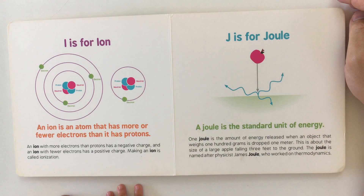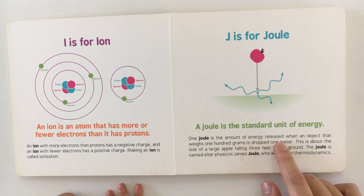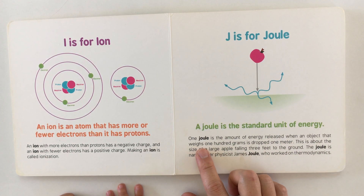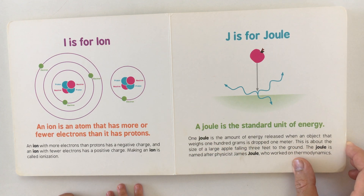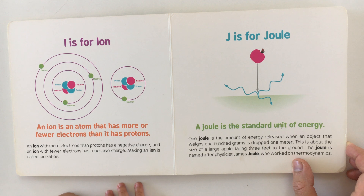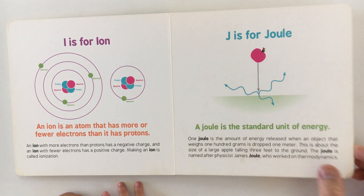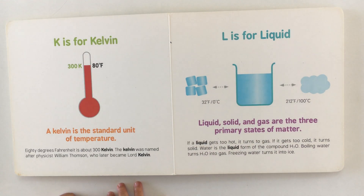J is for joule. A joule is a standard unit of energy. One joule is the amount of energy released when an object that weighs 100 grams is dropped one meter — about the size of a large apple falling three feet to the ground. The joule is named after physicist James Joule, who worked on thermodynamics.